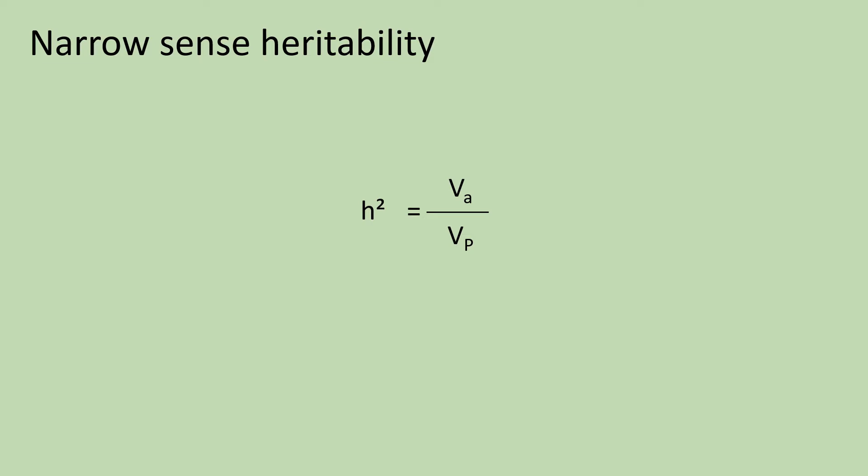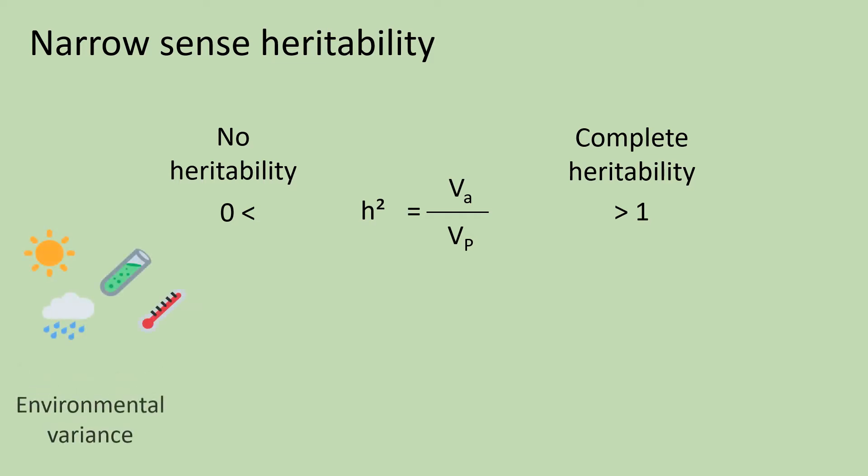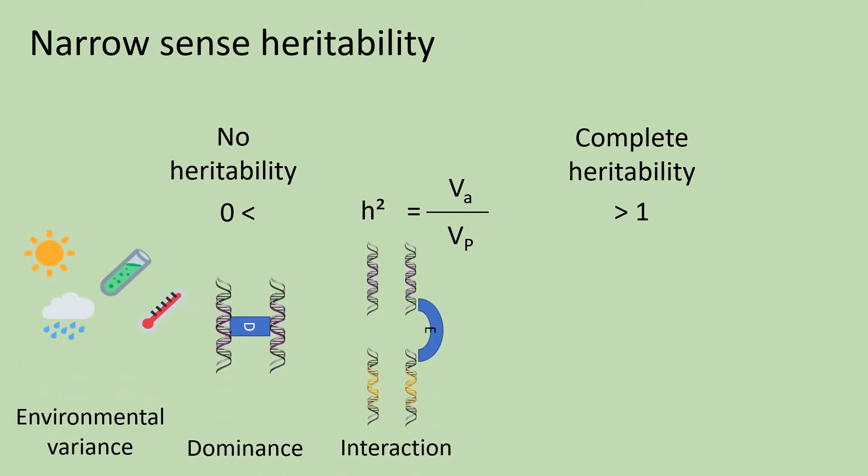Narrow sense heritability is a measure of the relative additive genetic variance to the total phenotypic variance in the population. Same as broad sense heritability, narrow sense heritability also varies between 0 and 1. When it is close to 0, it means that most phenotypic variation in the population is due to environmental but also non-additive genetic effects. And when it is close to 1, it means that most observed phenotypic variation in the population is due to additive genetic variance.